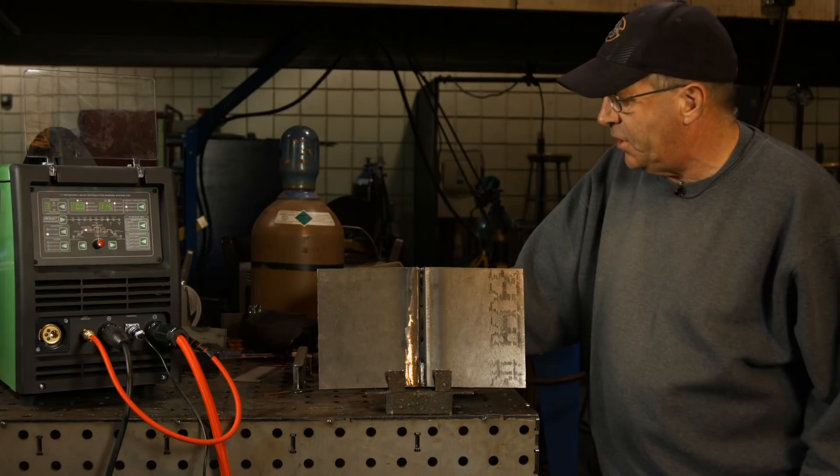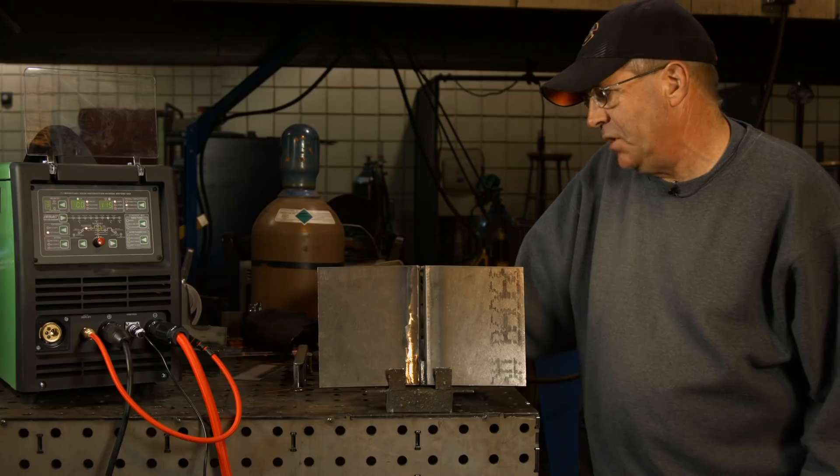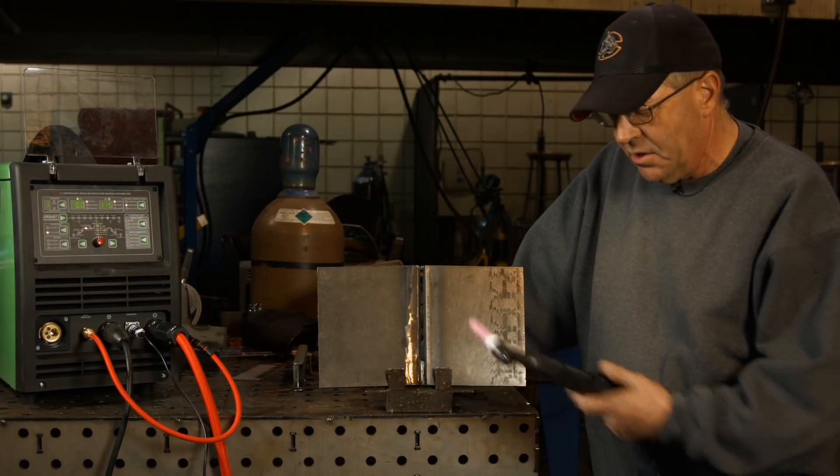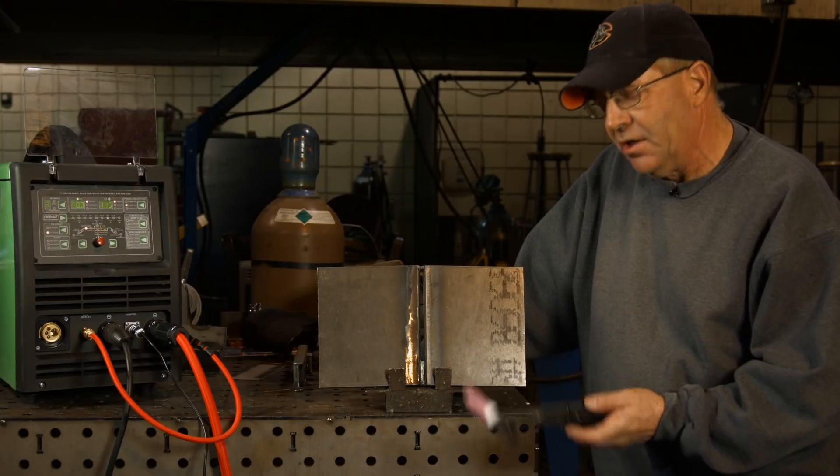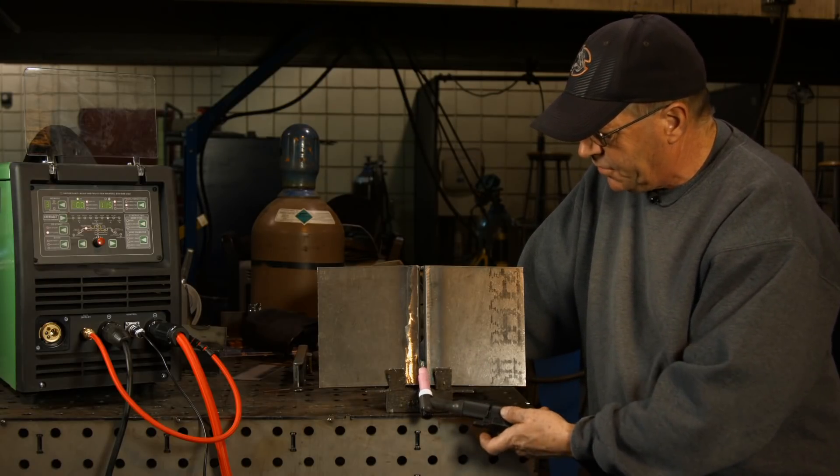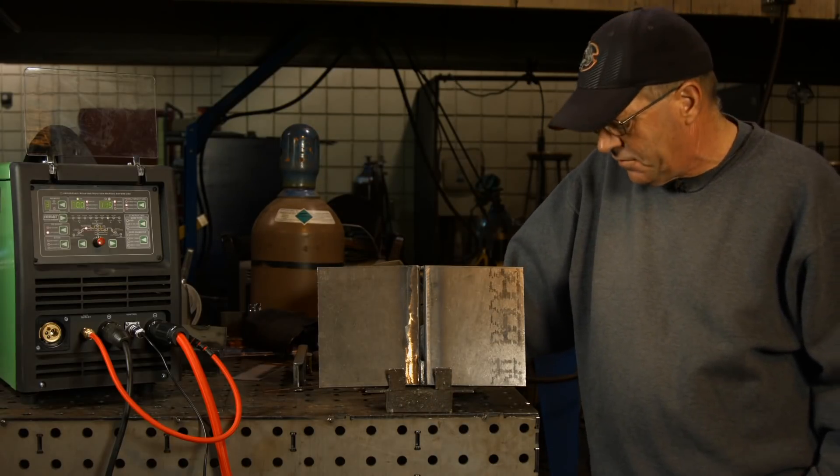It's an Everlast 251 SI, a multi-process machine. Today I'm running TIG and I want to do a set amperage. On this program it would be called a 4T where I do a lift arc, depress the contactor, lift arc, let go of the contactor and it just goes to 115 and stays on 115.